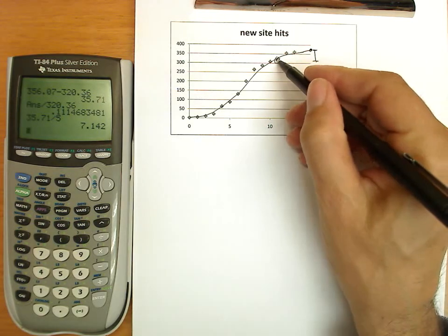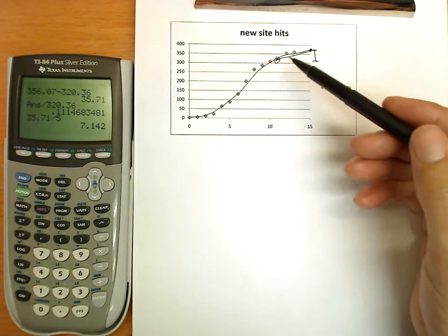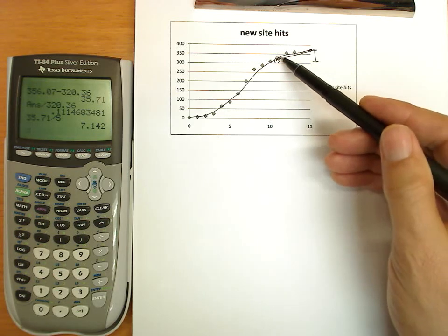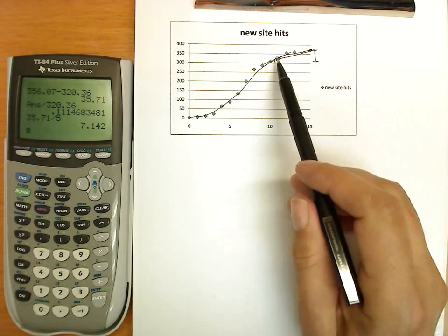Average rate of change is actually the slope of this line segment here. And very soon, we'll begin talking about instantaneous rate of changes, which are slopes at precisely a point. For example, slope along here might be an instantaneous rate of change.